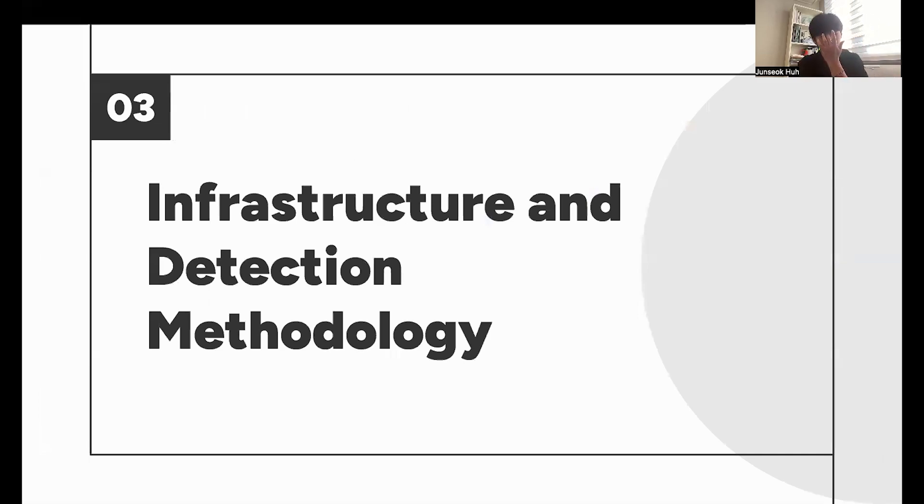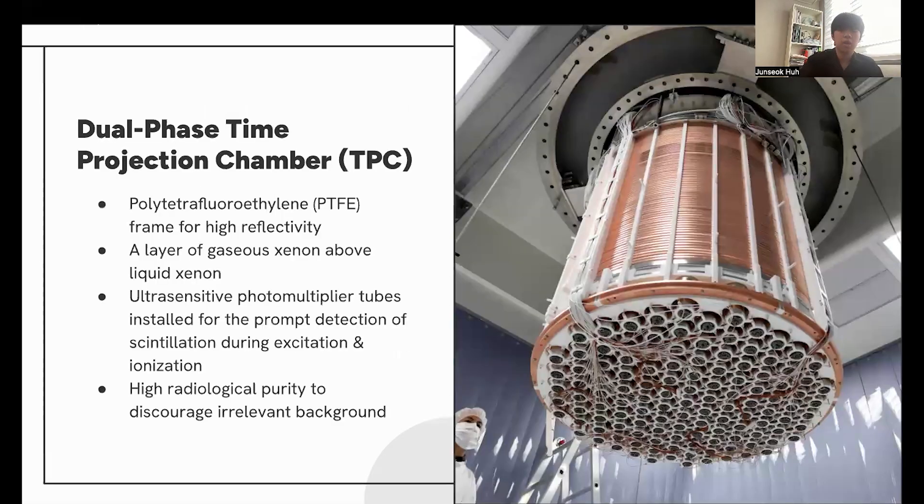The infrastructure and detection methodology. A crucial implement of the Xenon-NT experiment would be the dual-phase time projection chamber, which I'll refer to as the TPC. The TPC has a polytetrafluoroethylene frame for high reflectivity so that it can better detect light, and a layer of gaseous xenon above the liquid Xenon concentration.